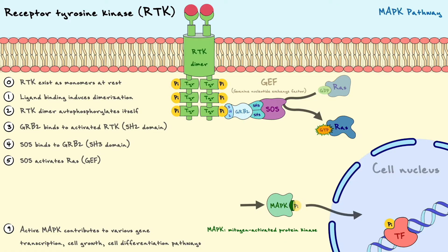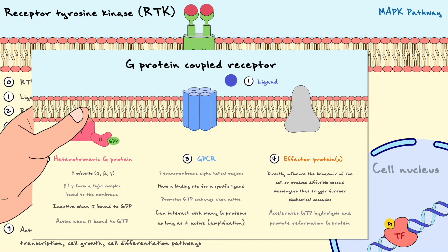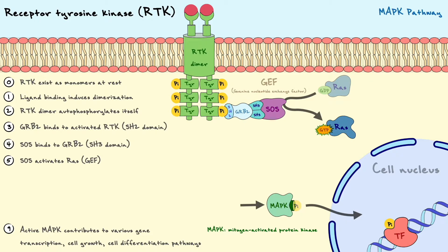SOS will then activate a G-protein named RAS by exchanging GDP for GTP. In biology jargon, we refer to SOS as a guanine nucleotide exchange factor, or GEF. RAS is a monomeric G-protein — unlike the heterotrimeric G-protein composed of alpha, beta, and gamma subunits covered in our GPCR discussion, RAS is only one subunit, but it functions in the same way: when bound to GDP it is inactive, and when bound to GTP it is active. Notably, RTKs do not activate the G-protein directly; it is the activation of multiple adapter proteins that leads to the GDP-to-GTP switch, whereas GPCRs directly activated the G-protein.